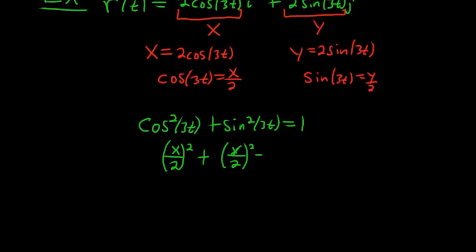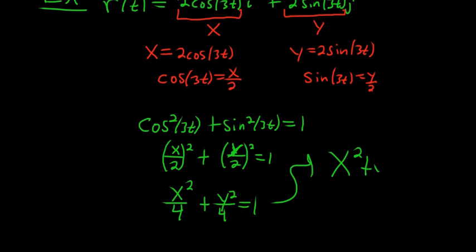We did these before when we talked about rewriting things as plane curves, taking a vector-valued function and writing it as a plane curve. This is x squared over 4 plus y squared over 4 equals 1. Multiply by 4 and you have x squared plus y squared equals 4.